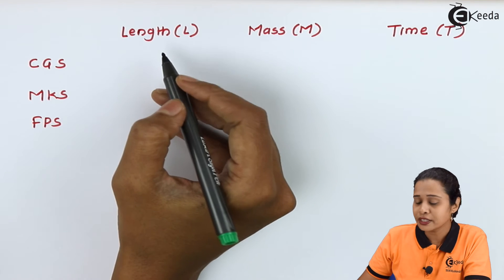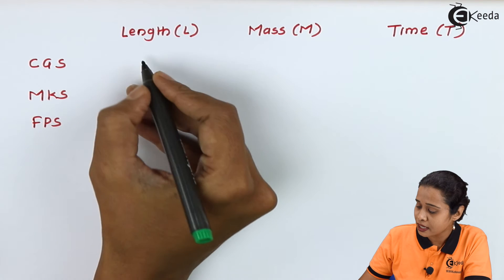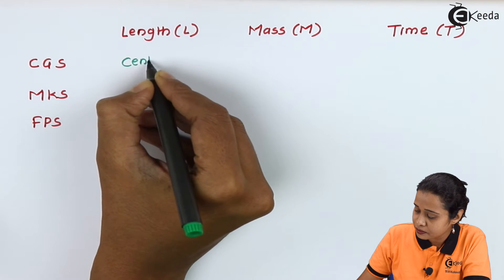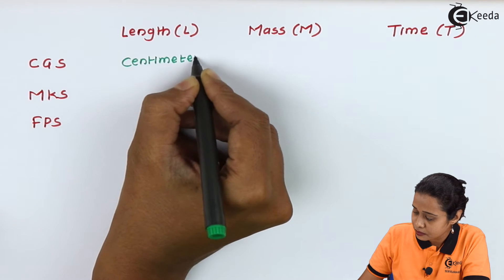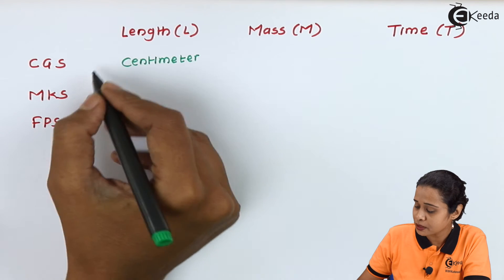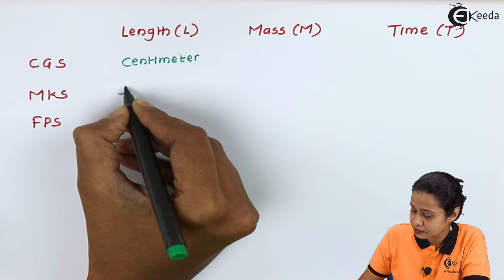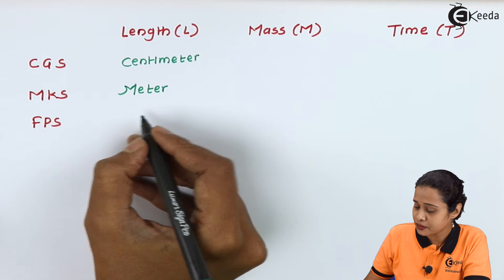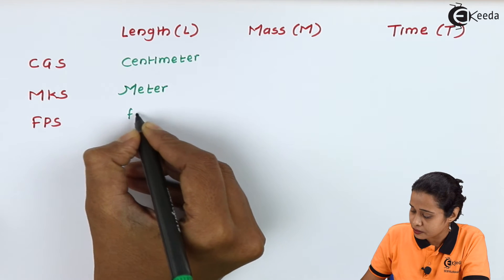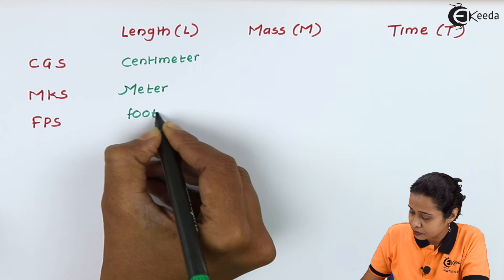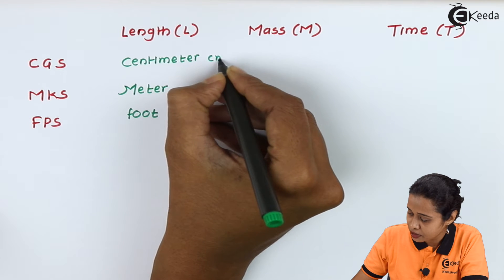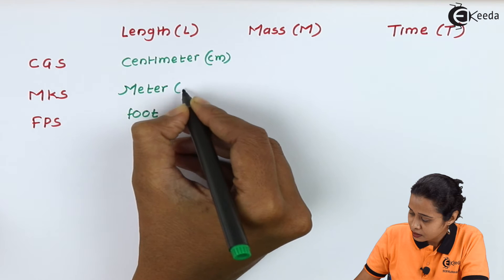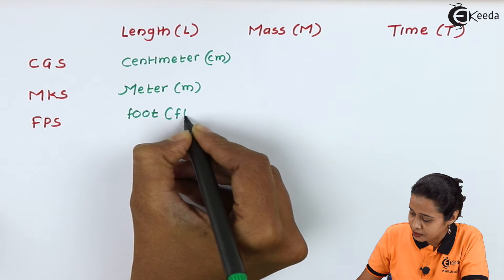Now in case of CGS system, we express length in centimeters. In case of MKS, we express length in meters. And in case of FPS, we measure length in foot. Here we can write down centimeter, meter, and foot.